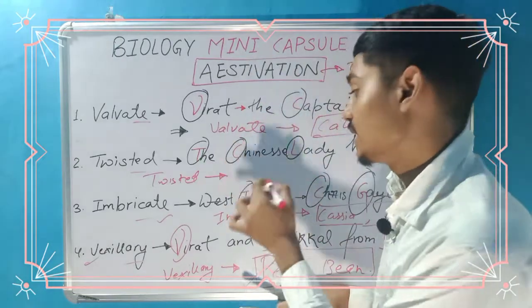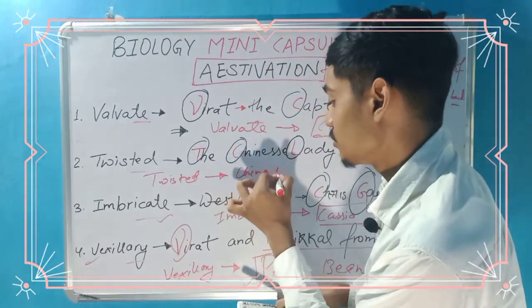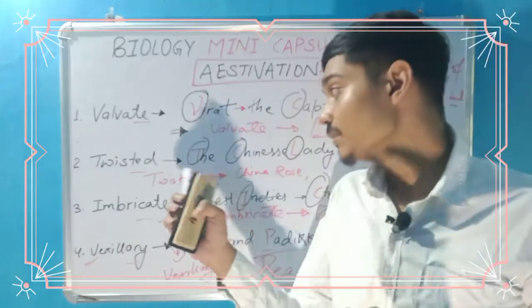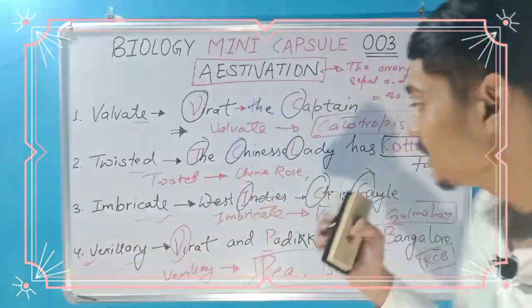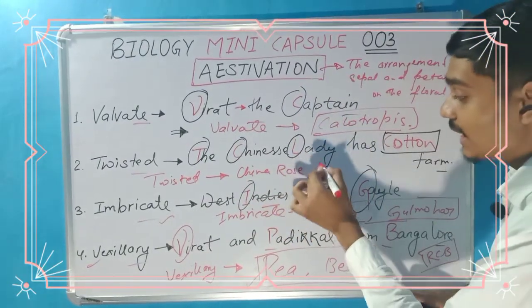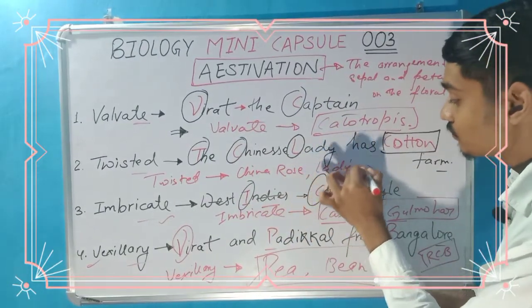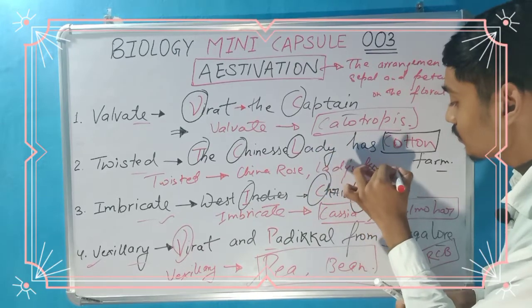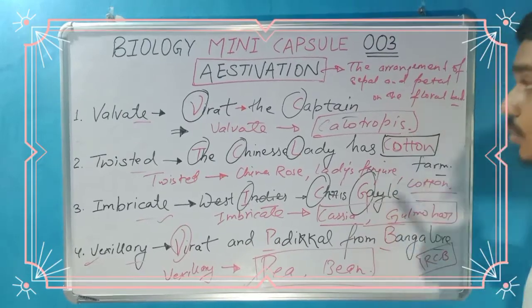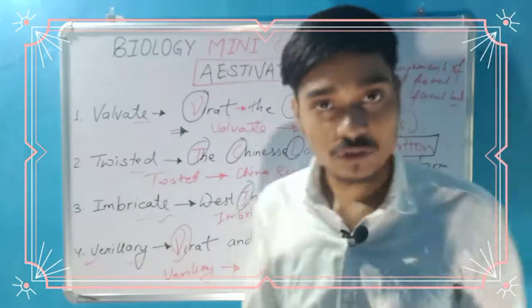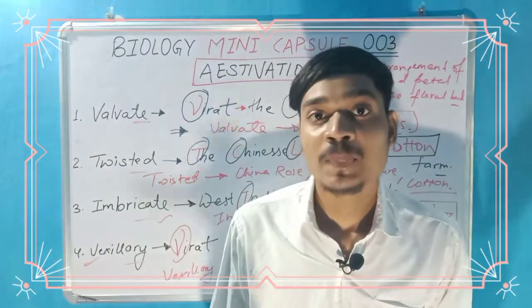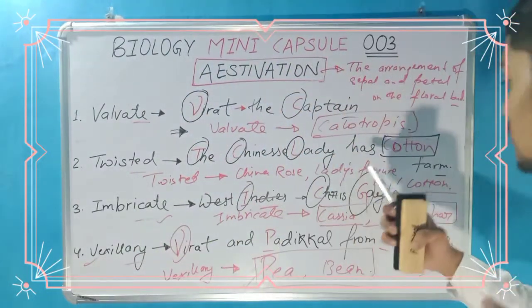Chinese stands for China Rose. So C for China Rose — Chinese for China Rose. And this is the best one to learn. L is for Lady's finger. And Cotton is itself — the word Cotton is in the mnemonic. So the twisted examples are China Rose, Lady's finger, and Cotton.